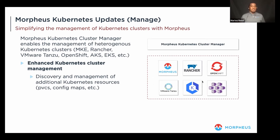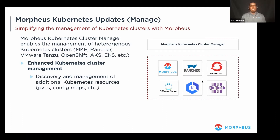The Morpheus Kubernetes cluster manager enables management of heterogeneous clusters — supporting MKE (Morpheus Kubernetes Engine), Rancher, OpenShift, VMware Tanzu, AWS EKS, and CNCF-conformant clusters of various flavors. A key addition in this release is improved management of Kubernetes clusters, including the ability to discover and manage additional resources like persistent volume claims, configuration maps, and other resources not available in the previous release.